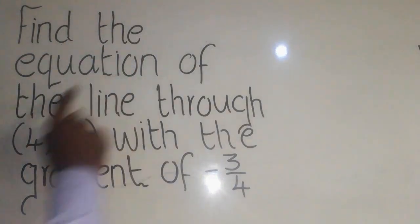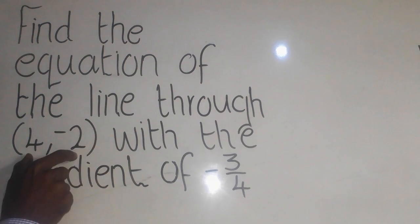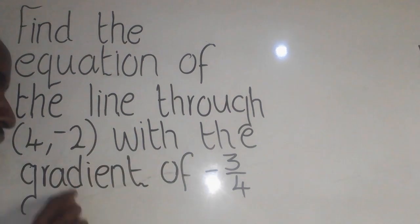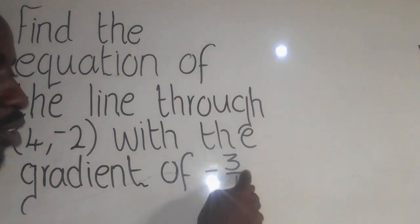Find the equation of the line through this coordinate here with the gradient of negative 3 over 4.